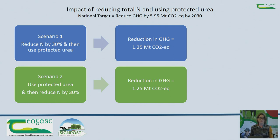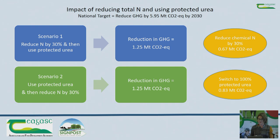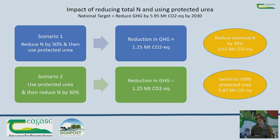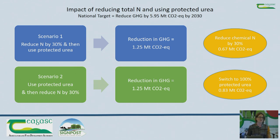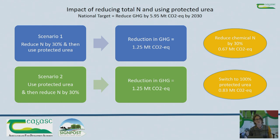The question is which do we do first. It was found that switching to 100 percent protected urea first reduced emissions by 0.83 million tons, with the remainder coming from the 30 percent lower nitrogen use. The advice is: firstly switch whatever nitrogen you're using to protected urea and use low-nitrate compounds like 18-6-12 and 10-10-20, then concentrate on reducing nitrogen. We know from case studies that switching to 100 percent protected urea can reduce a farm's overall emissions by 7–8 percent, and it's currently considerably cheaper.